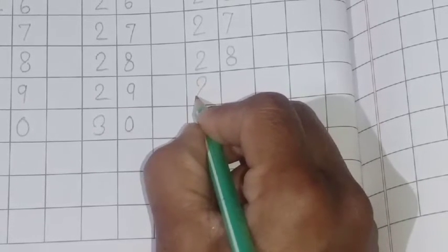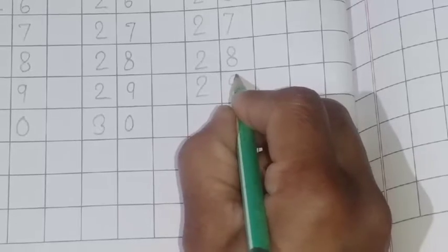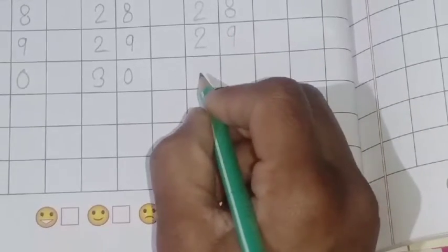Next spelling 29. T-W-E-N-T-Y, twenty. N-I-N-E, nine. 29.